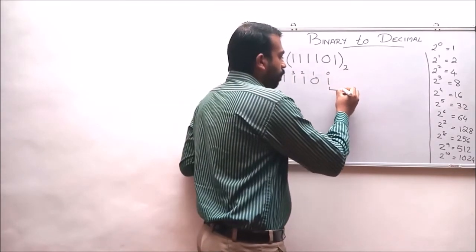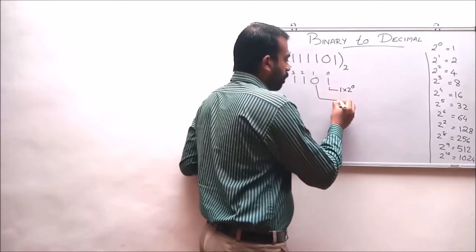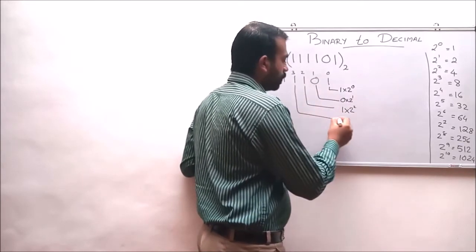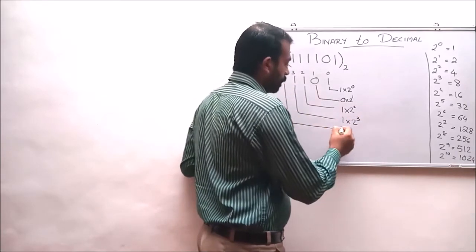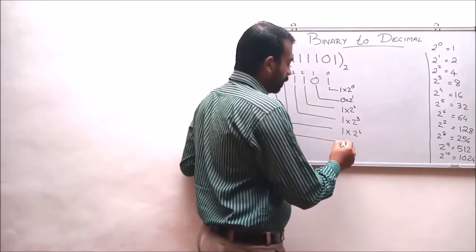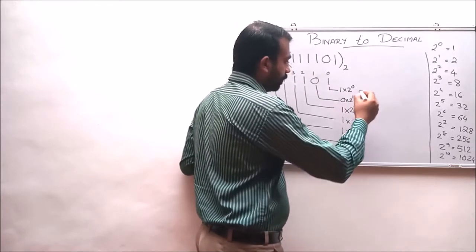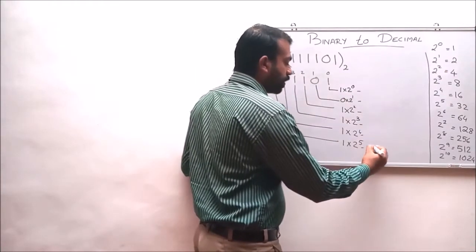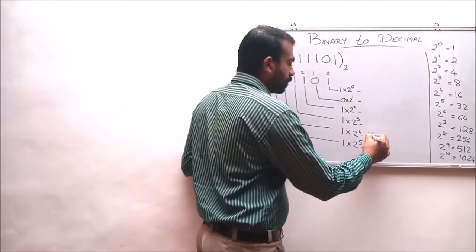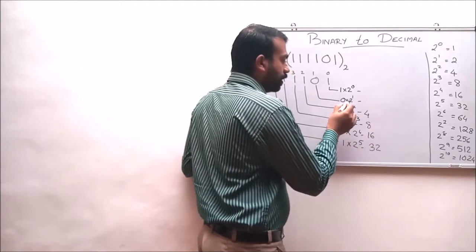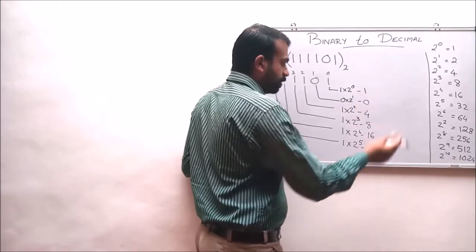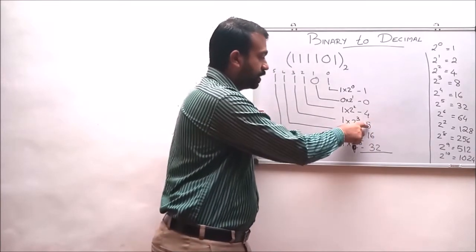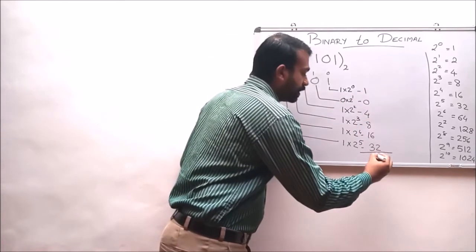Multiplying each digit: 1 × 2⁰, 0 × 2¹, 1 × 2², 1 × 2³, 1 × 2⁴, and 1 × 2⁵. From the table: 2 raised to 5 is 32, 2 raised to 4 is 16, this is 8, 4. Multiplying with 0 gives 0, and the last is 1. So 32 plus 16 is 48, plus 8 is 56, plus 4 is 60, plus 1 is 61.